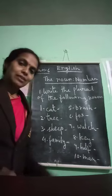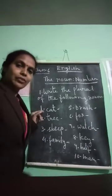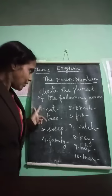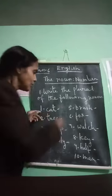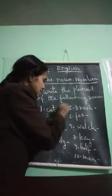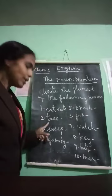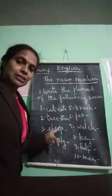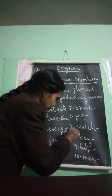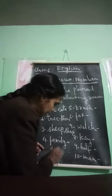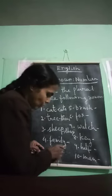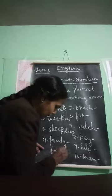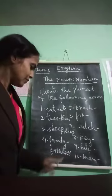I hope you are finished. Let me tell you the answers — check whether yours are correct. Cat → cats. Tree → trees. Ship/sheep → sheep (same). Family — it ends in -y, so remove -y and add -ies → families. Brush → brushes.